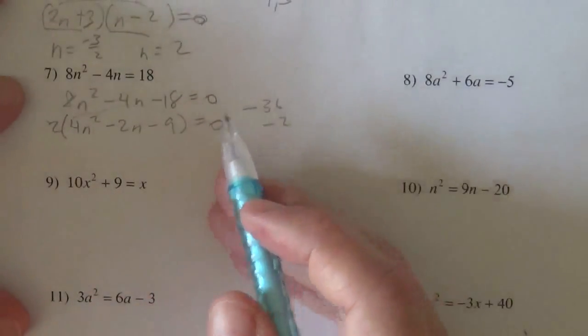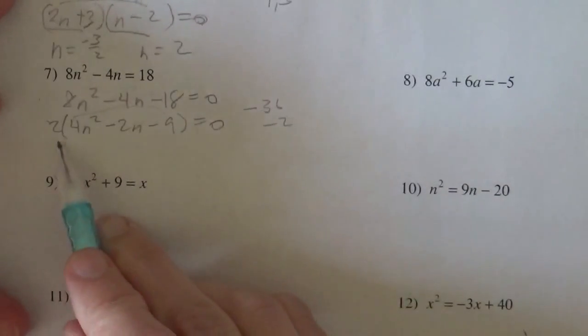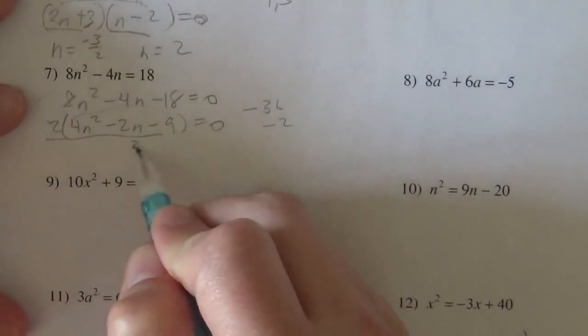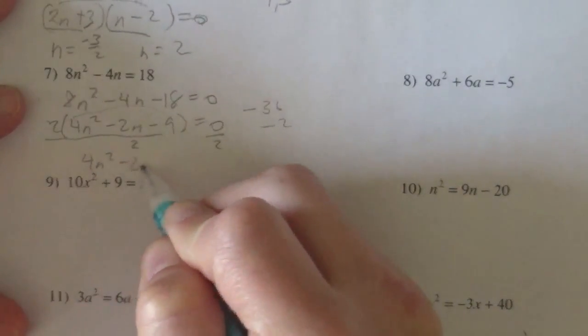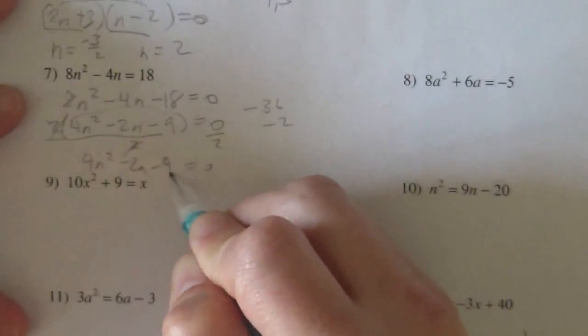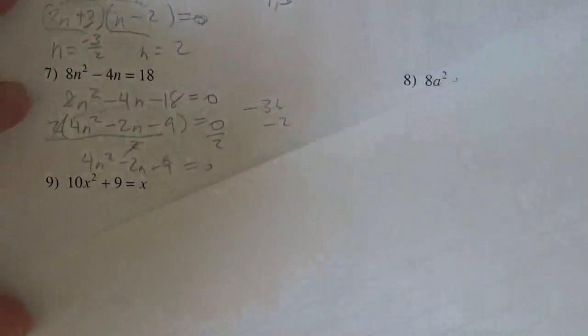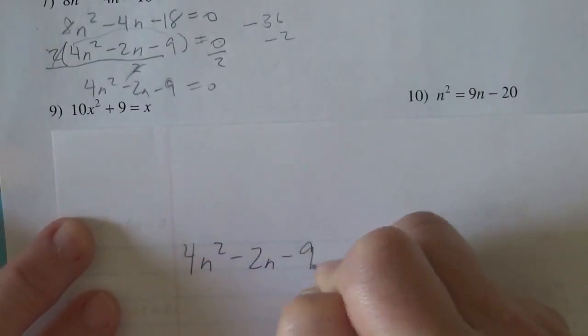So we would try to factor this, and it's not going to work. So usually what I do after that is I go straight to my quadratic formula. That 2 that I pulled out doesn't matter in an equation because I can divide both sides by 2, so that those 2 cancel, and then 0 divided by 2 is just 0. So let me take another sheet of paper out and do this 4n² - 2n - 9 = 0.